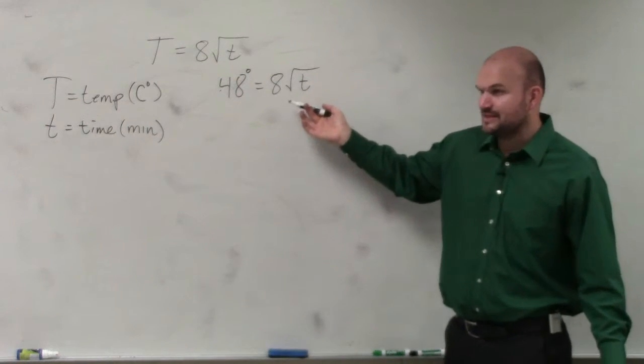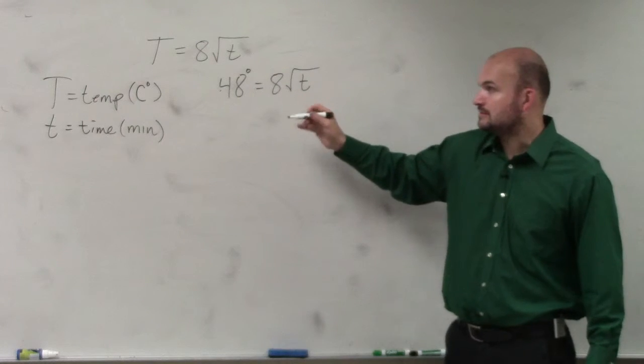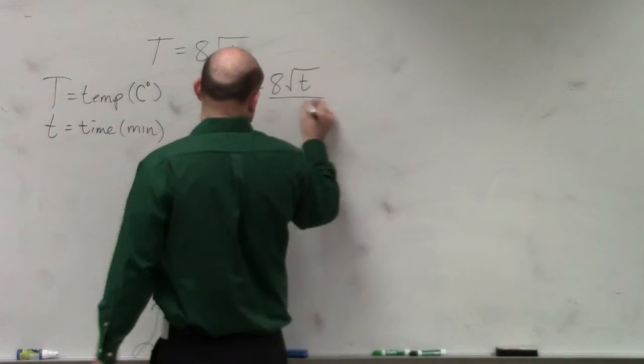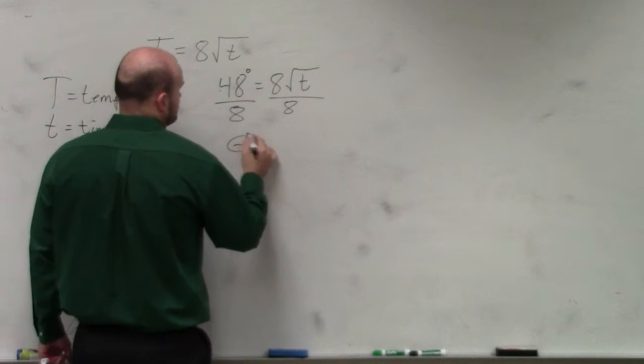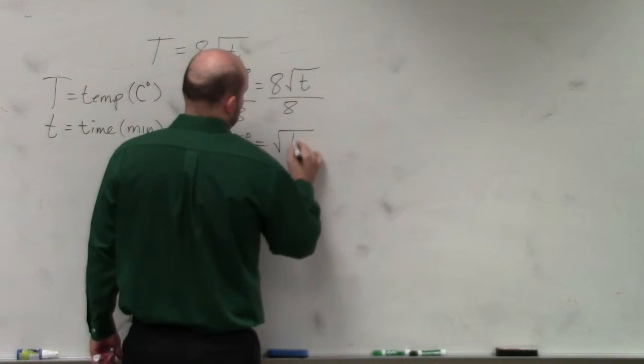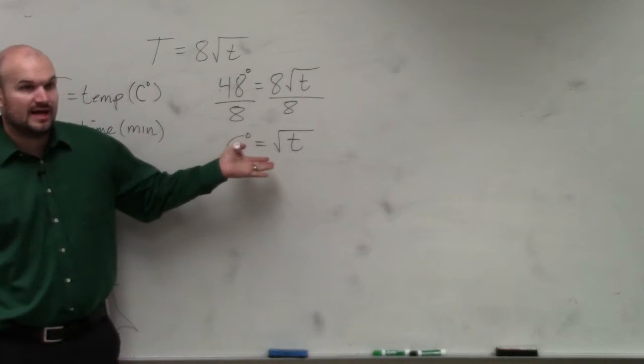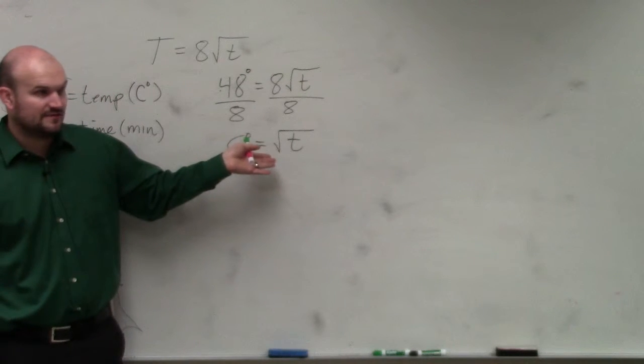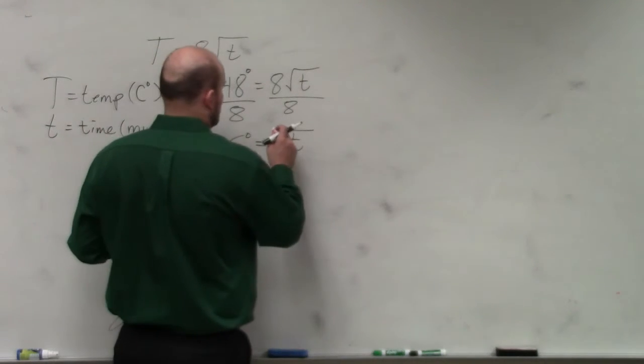So we look at t. What's happening to t? It's being multiplied by 8, and we have the square root. So how do we undo multiply by 8? Divide by 8. Then how do we undo the square root? Well, you've got to square both sides, right?